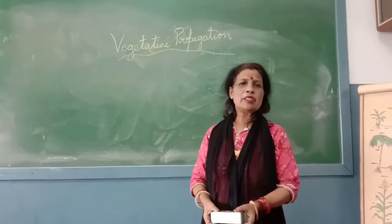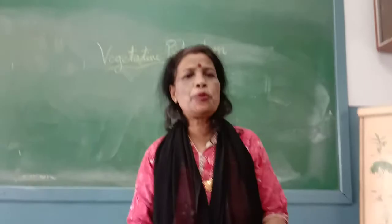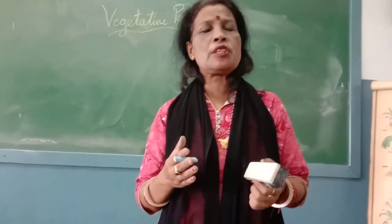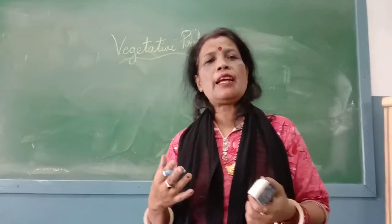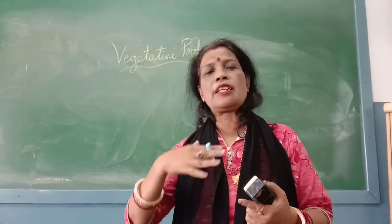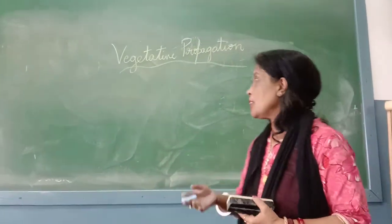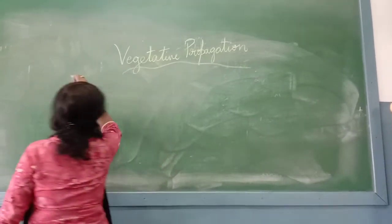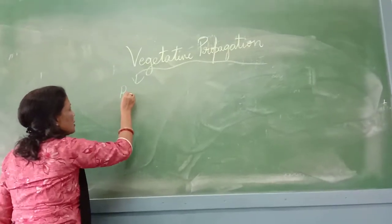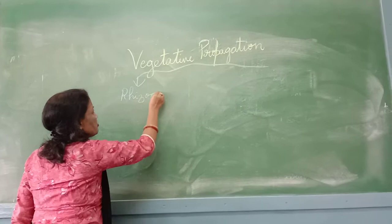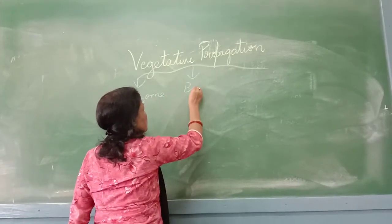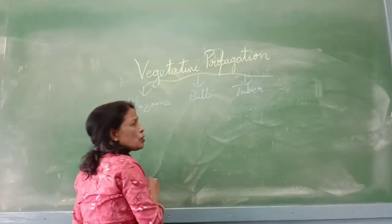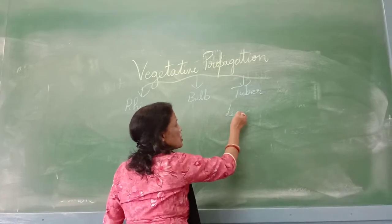Good morning, children. Last class we were discussing about vegetative propagation. It is a type of reproduction in which the vegetative parts — root, stem and leaves — can give rise to a new plant.